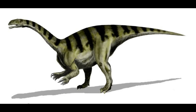Early mammals diversified into various ecological niches, with adaptations that allowed them to exploit different food sources and habitats. Some became insectivorous, while others may have been omnivorous or herbivorous. Their small size and nocturnal habits likely helped them avoid predation by larger reptiles and early dinosaurs.